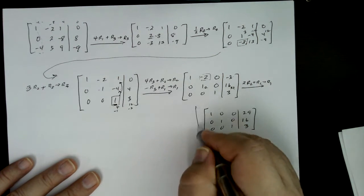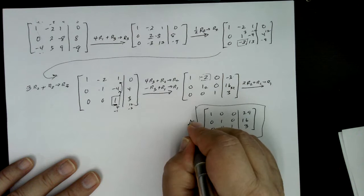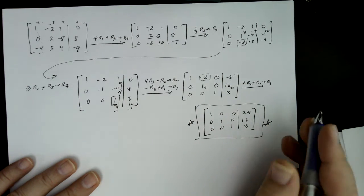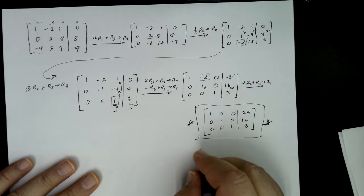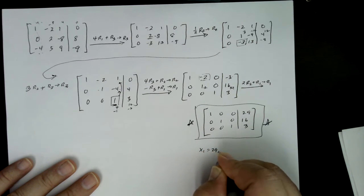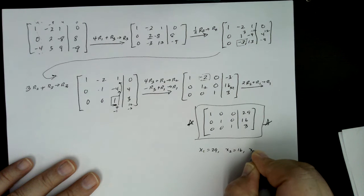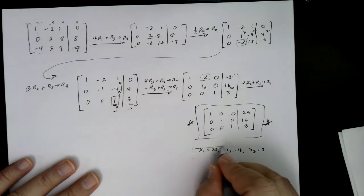And this is kind of the goal of our row manipulation. This tells us directly that x1 is equal to 29, x2 is equal to 16, and x3 is equal to 3. And we're done.